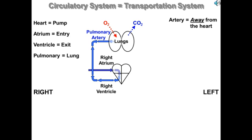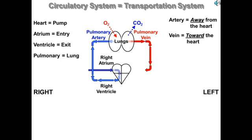When the blood leaves the lungs, we now draw it red. Anytime blood is going back towards the heart, it is in a vein. Arteries and veins are very different — they have very different structures. Veins always carry blood towards the heart; arteries carry blood away. Since this blood is leaving the lungs and coming back to the heart, it's in a vein, and since pulmonary means lung, this is the pulmonary vein. We bring high-oxygen blood back to the left atrium of the heart.